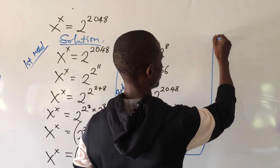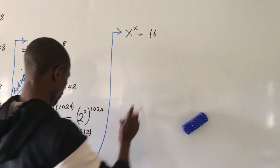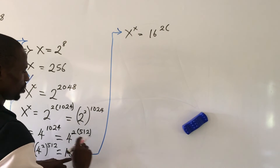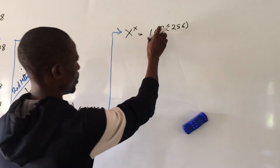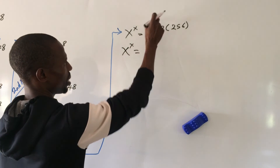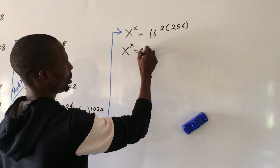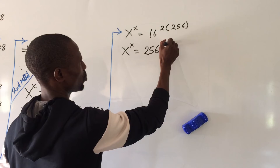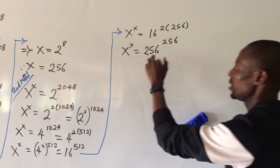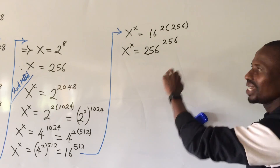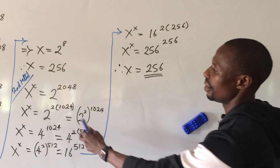Proceeding further: x^x = 16^(2×256) = (16^2)^256 = 256^256. We've gotten what we're looking for. We now have x^x = 256^256, and therefore x = 256. The same answer we got from the first method.